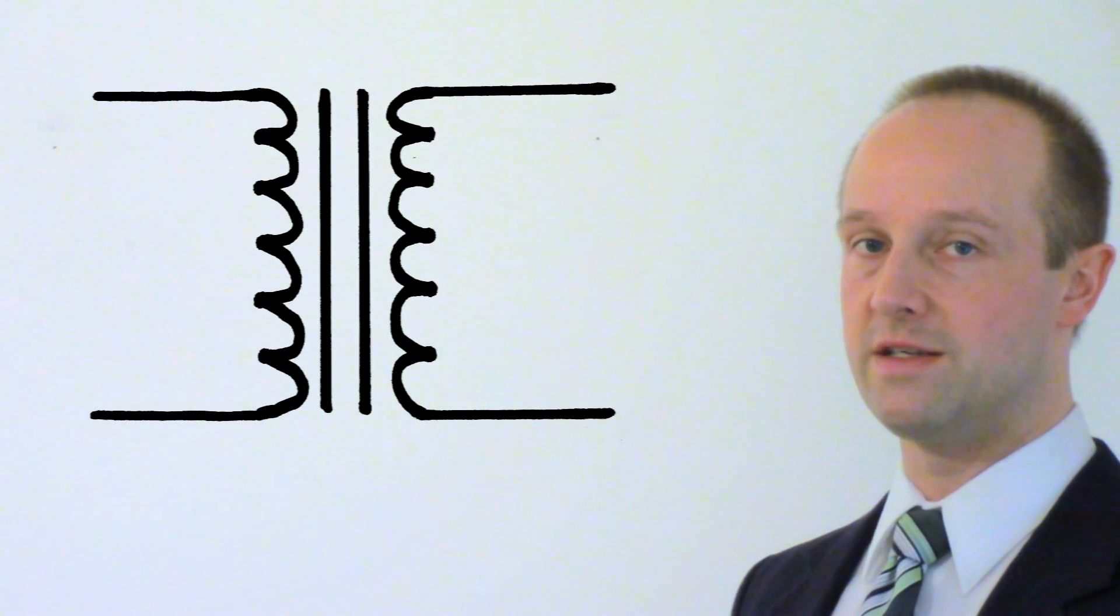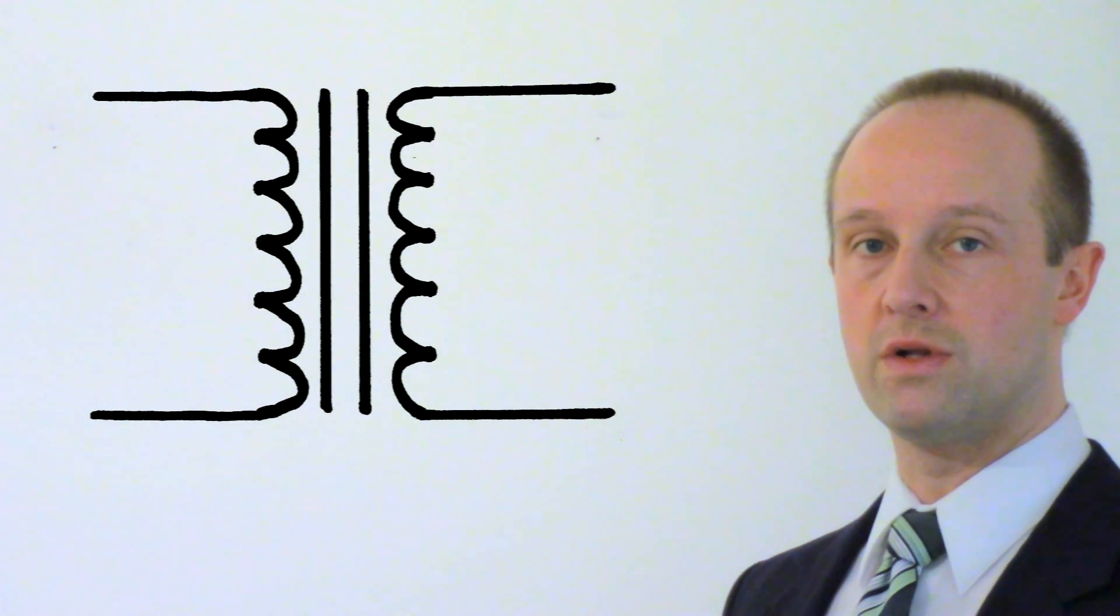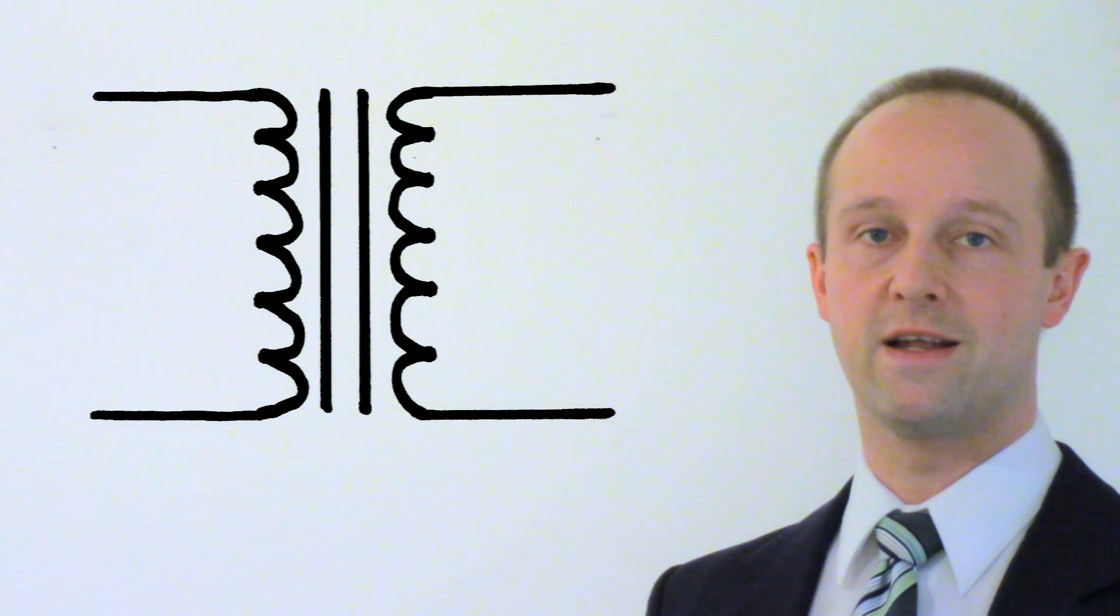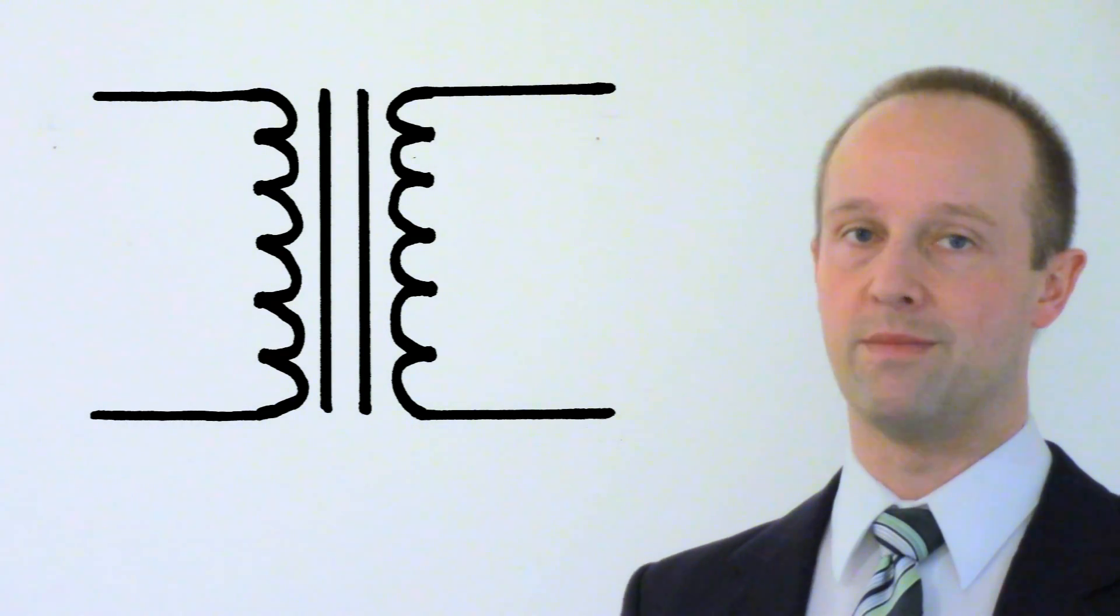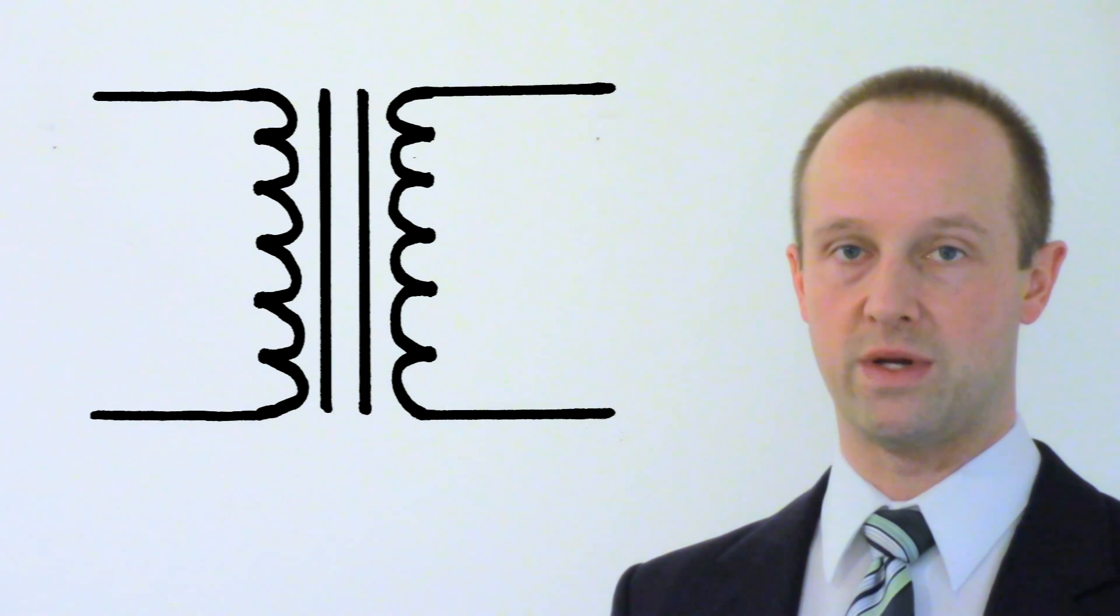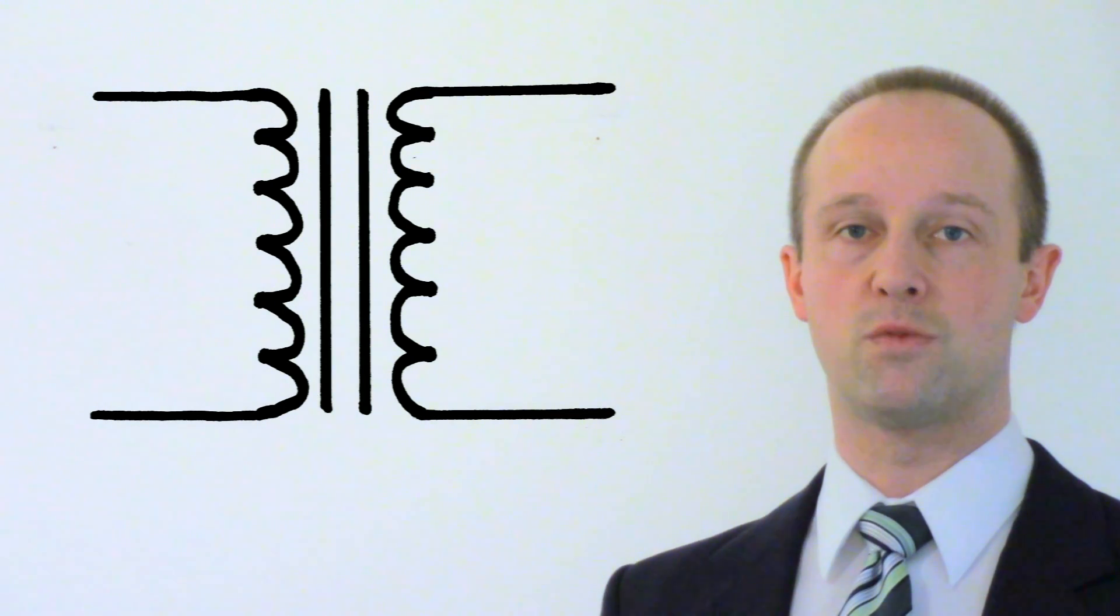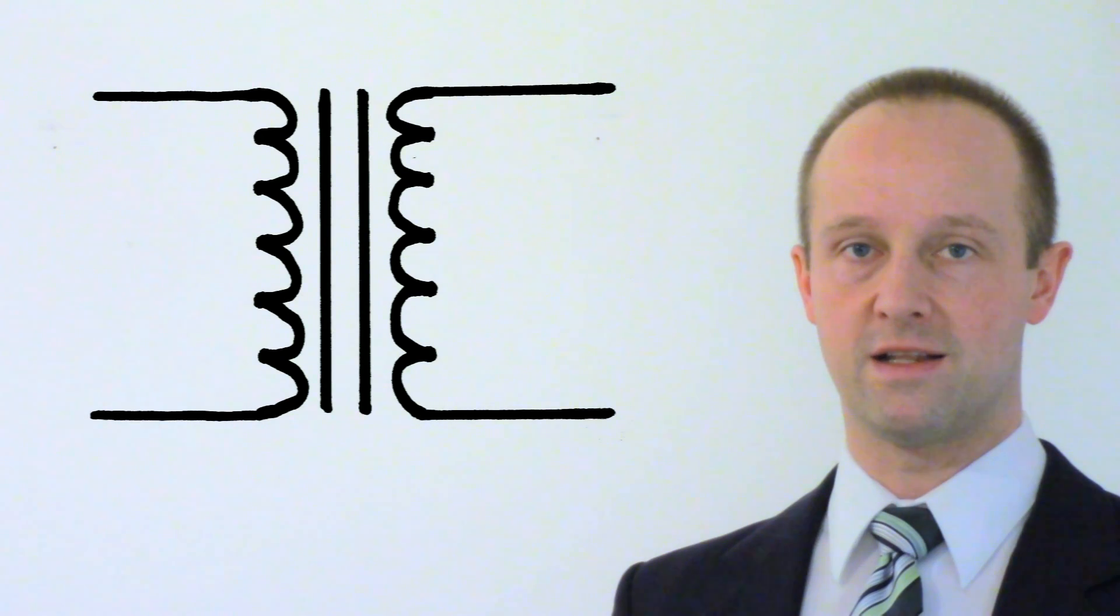Now an important thing to notice is that the primary coil and the secondary coil are not connected electrically. There is no electrical connection between them it's just that magnetic connection between them. And so this can make them quite useful for isolating electrical supplies.